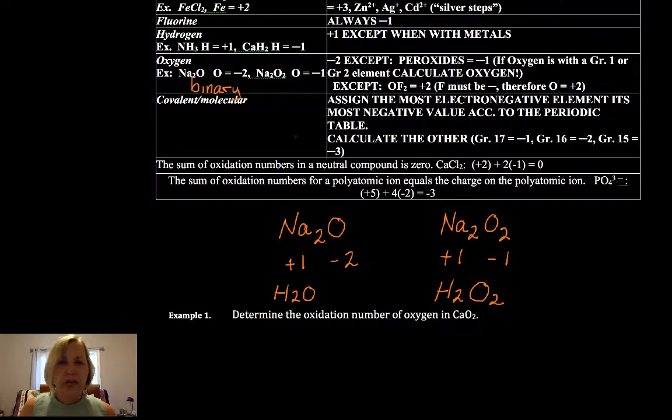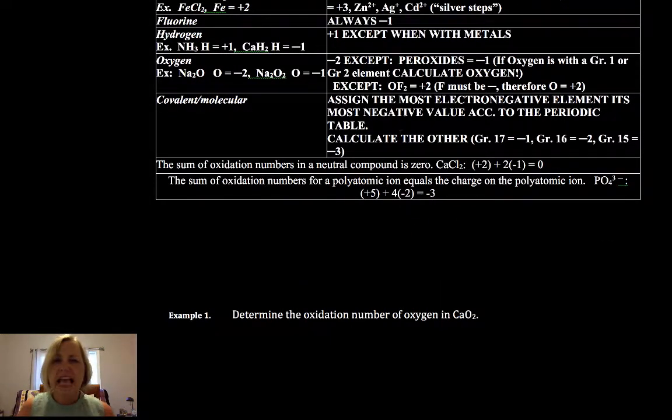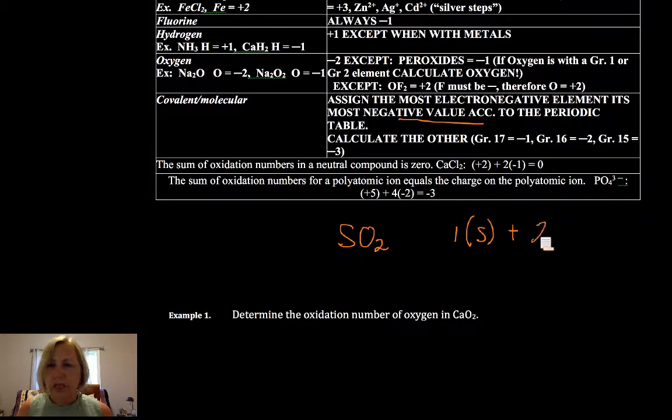Alright, a couple of other quick rules. If it's covalent or molecular, you assign the most electronegative element as negative as it can be according to the periodic table. So if I have SO2, for example, I have 1 sulfur, don't know its oxidation number, 2 oxygens, it's not going to be a peroxide unless it's with hydrogen or a metal. So it's negative 2 and then it's 0. So sulfur dioxide gas, the sulfur is going to be plus 4 oxidation number. So oxygen was the most negative.